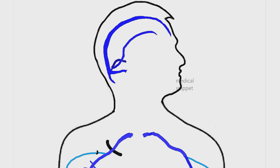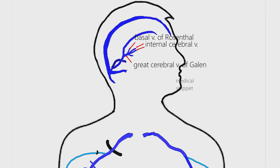One of the tributaries of the straight sinus is the great cerebral vein of Galen. It is formed by the union of the two internal cerebral veins. The great cerebral vein receives the basal veins of Rosenthal from each side before its termination into the straight sinus.